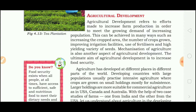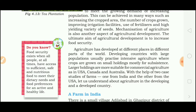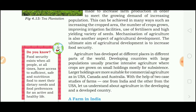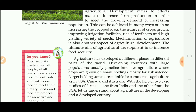As the population is continuously growing, we should take steps in favor of agricultural development. We should increase the crop area or the number of crops, increase irrigation facilities for farmers, improve the use of fertilizers and high-yielding variety of seeds, and focus on mechanization of agriculture. The ultimate aim of agricultural development is to increase food security. Developing countries with large populations usually practice intensive agriculture where crops are grown on small holdings, mostly for subsistence.